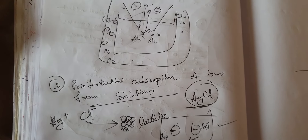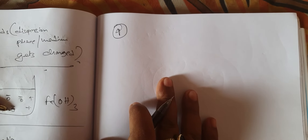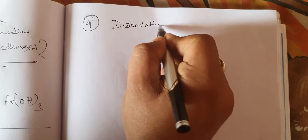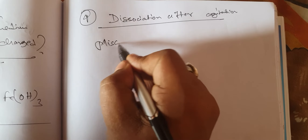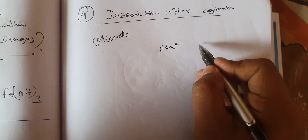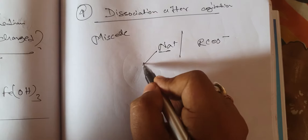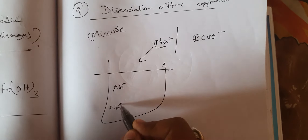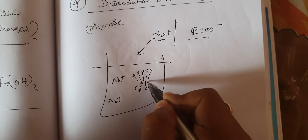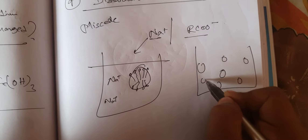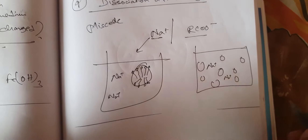The fourth method of getting charged is dissociation of molecules followed by agitation. A classic example is micelles. In a micelle, the Na⁺ from RCOO⁻ (soap) gets separated and moves around in the entire medium, while the RCOO⁻ forms the micelle. These micelle particles form the colloidal dispersed phase, and the entire dispersion medium becomes positively charged.